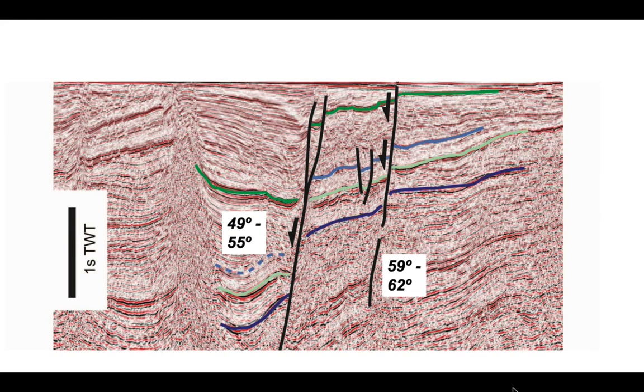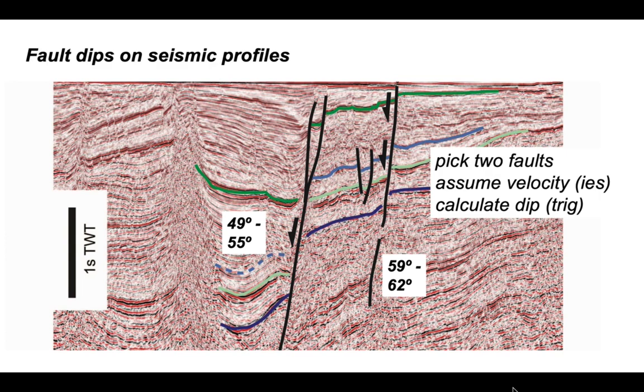So that's how this plays out. The left-hand fault has a dip of somewhere between 49 degrees and 55 degrees. The right-hand fault somewhere between 59 degrees and 62 degrees. A simple illustration of how to calculate the apparent dip of fault planes by assuming seismic velocities.